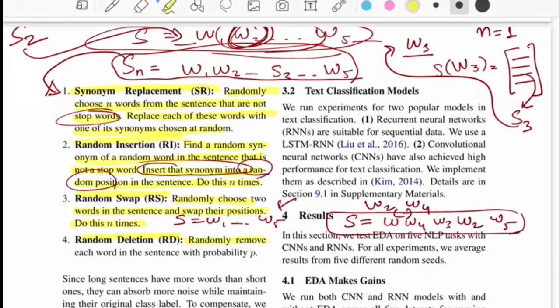The last one is randomly remove each word in a sentence with probability p, which is pretty straightforward.